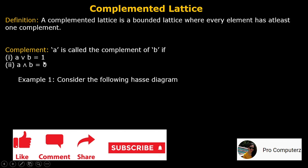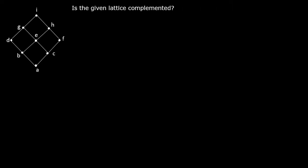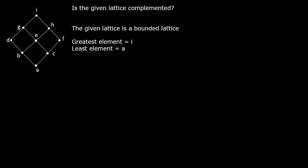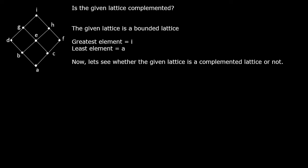Now consider the following Hasse diagram. We have to find out whether this Hasse diagram is complemented or not. This Hasse diagram is a lattice and our task is to find out if this lattice is complemented. First, this lattice is a bounded lattice because it has a greatest element equal to i and a least element equal to a, so it is a bounded lattice.